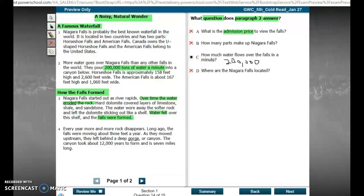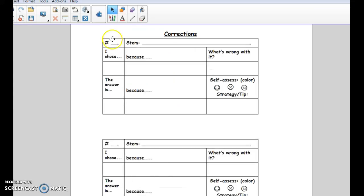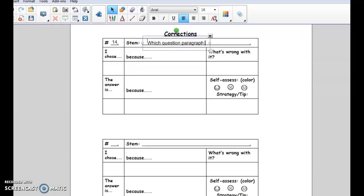You need to go to your corrections sheet. This is number 14. Stim was which question paragraph two answer. The strategy is look only at paragraph two or whatever it is that they reference and answer the question.